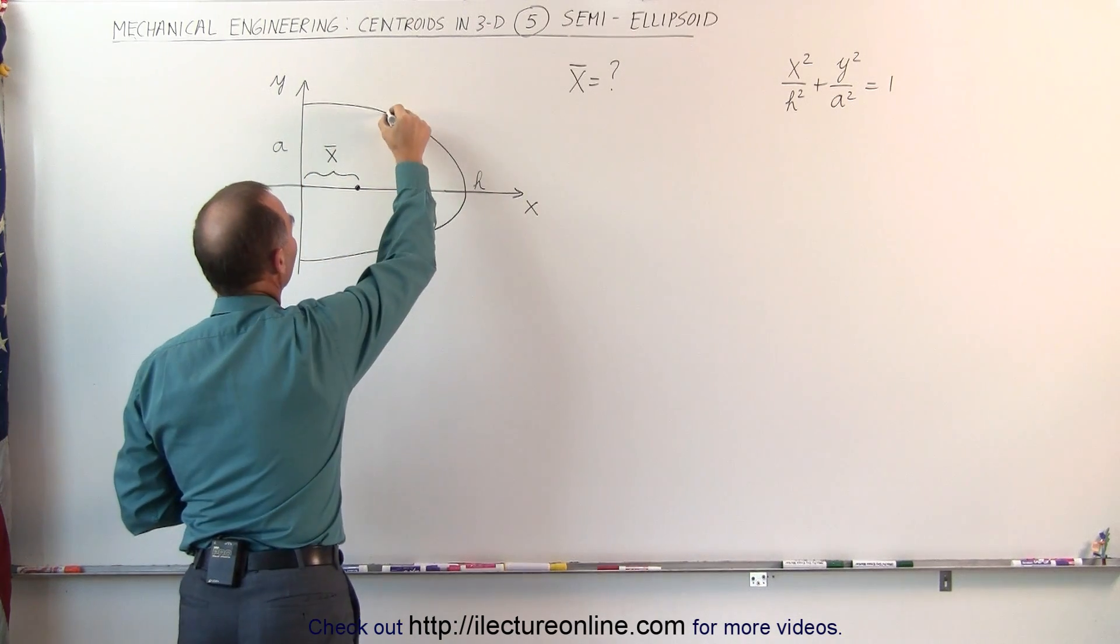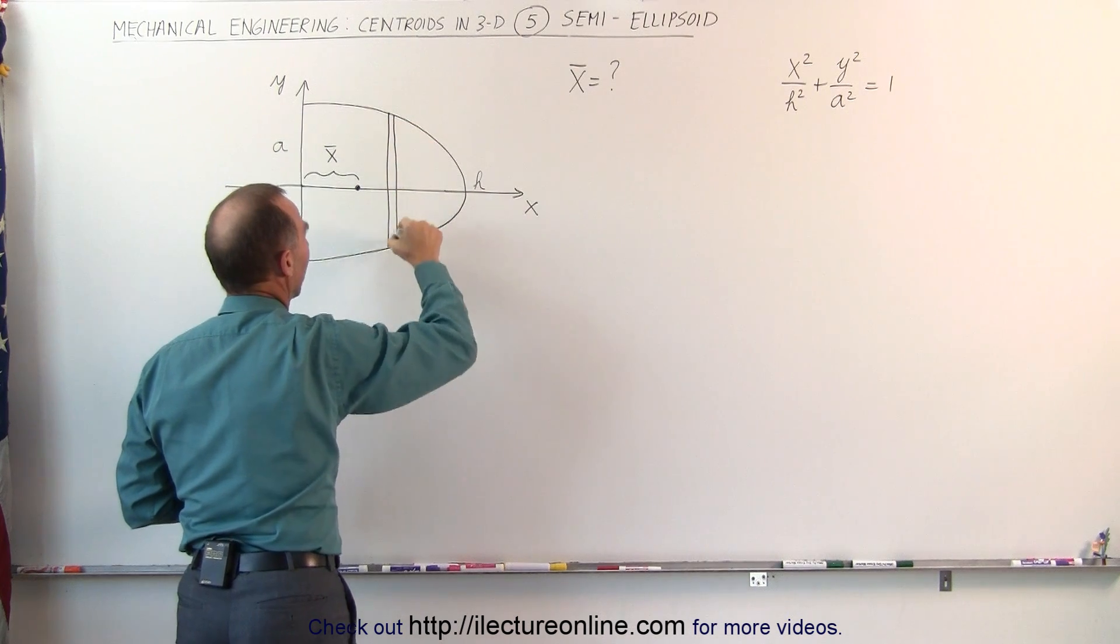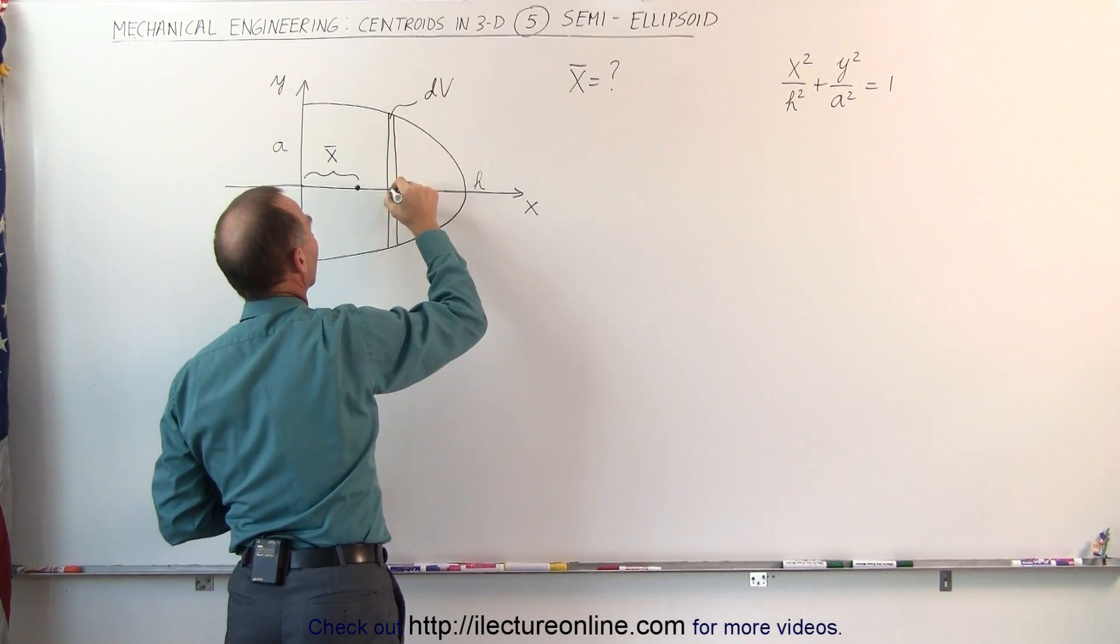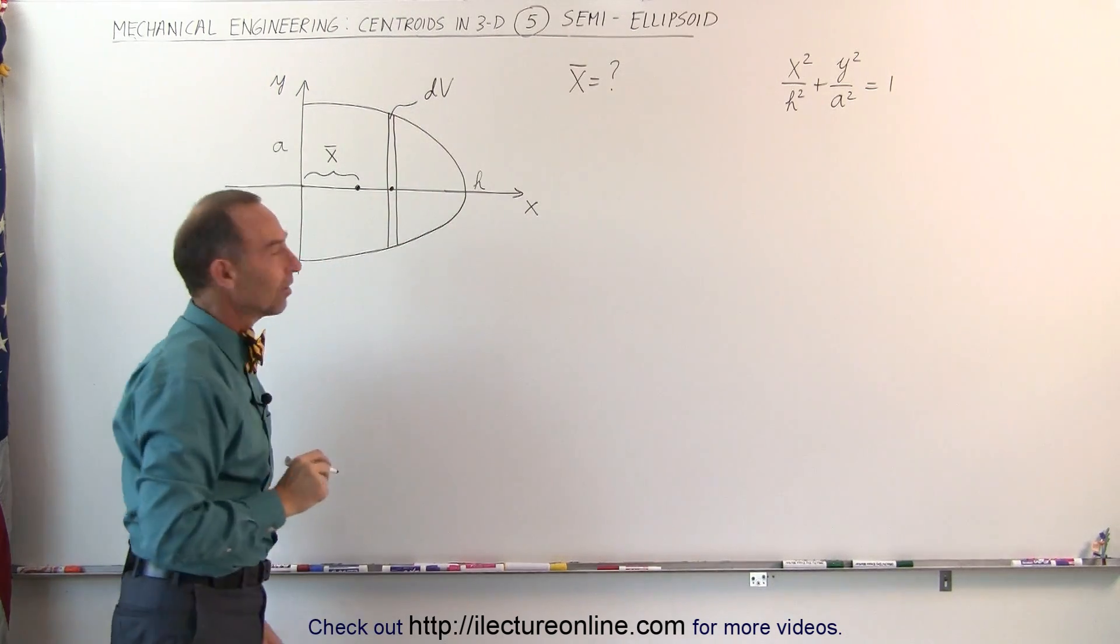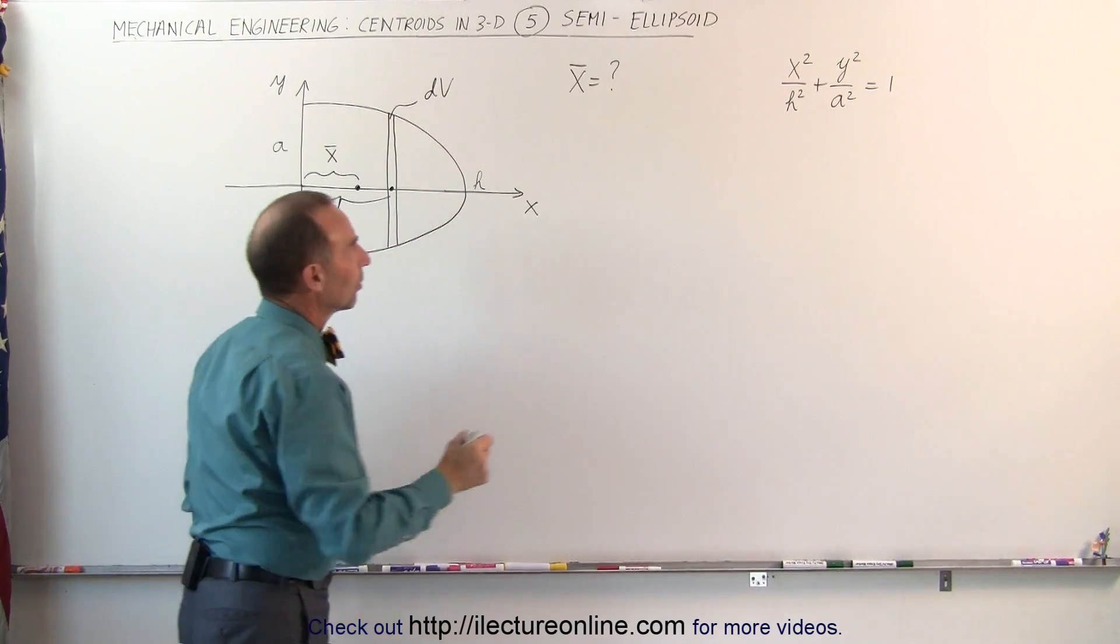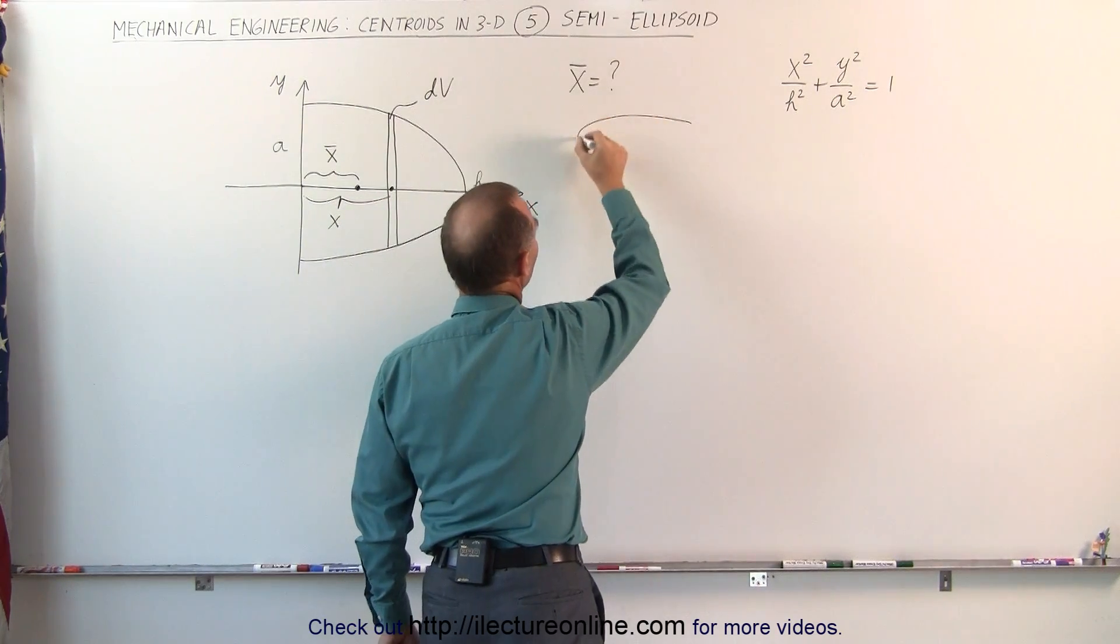And what we do to find it is we take a small little slice, and that will give us a small little dv, and the centroid of that slice is right there in the middle of the slice, of course, and that's easy to find, that's a distance x away from the origin. The little slice can be illustrated like this.